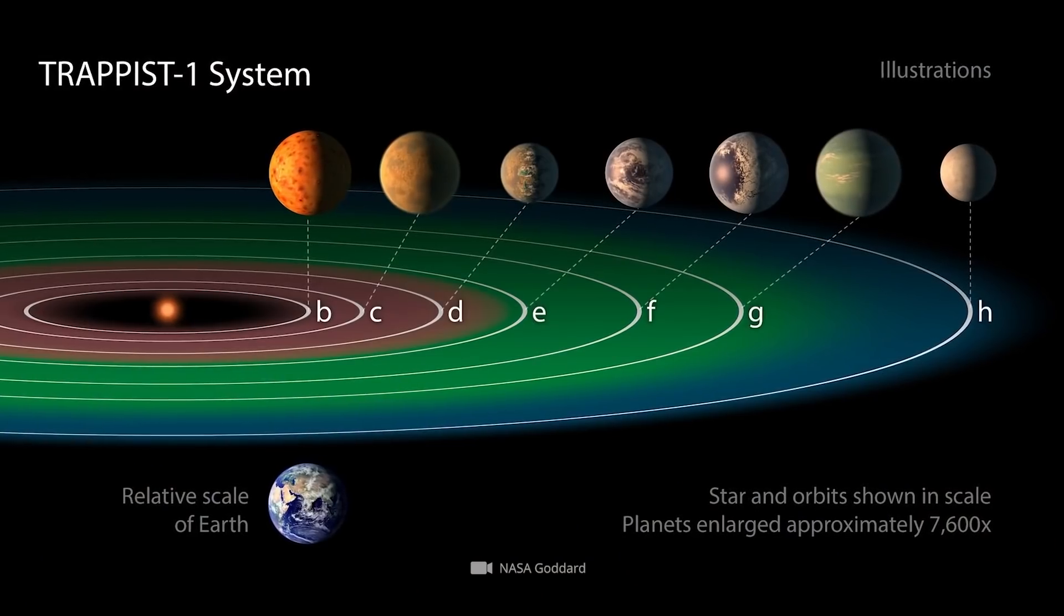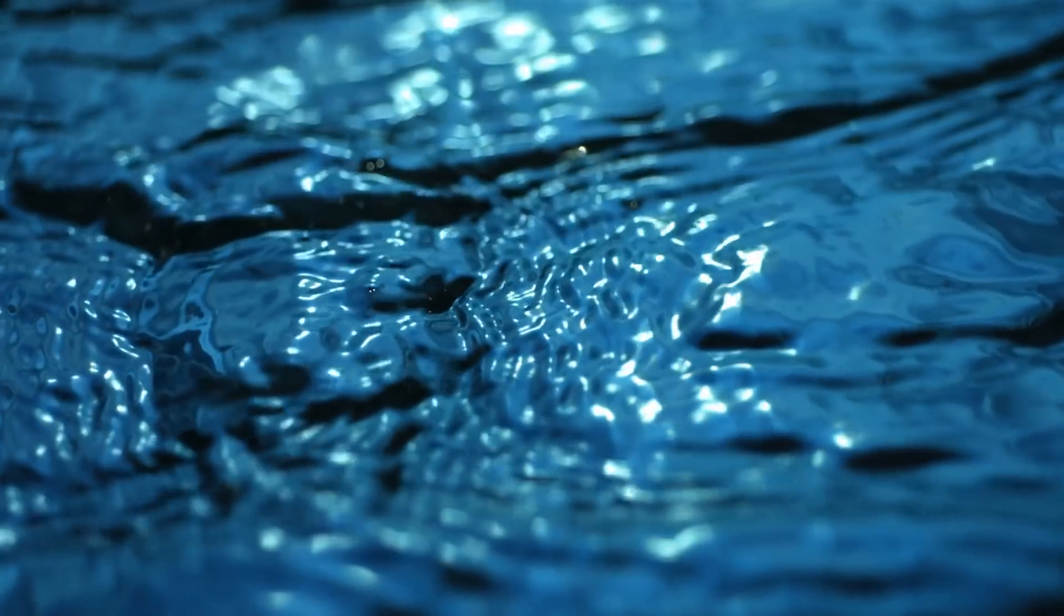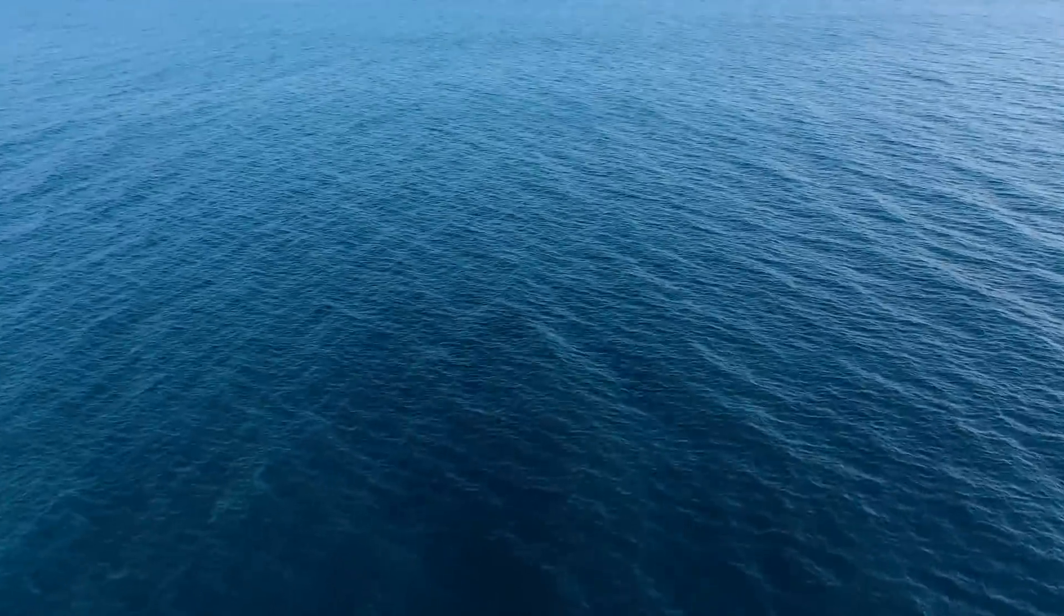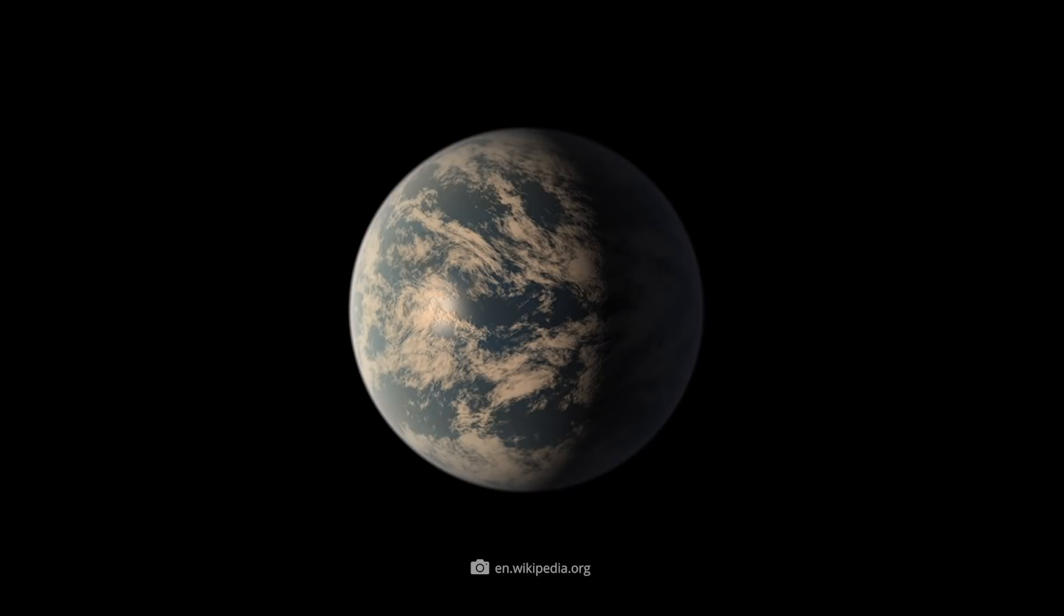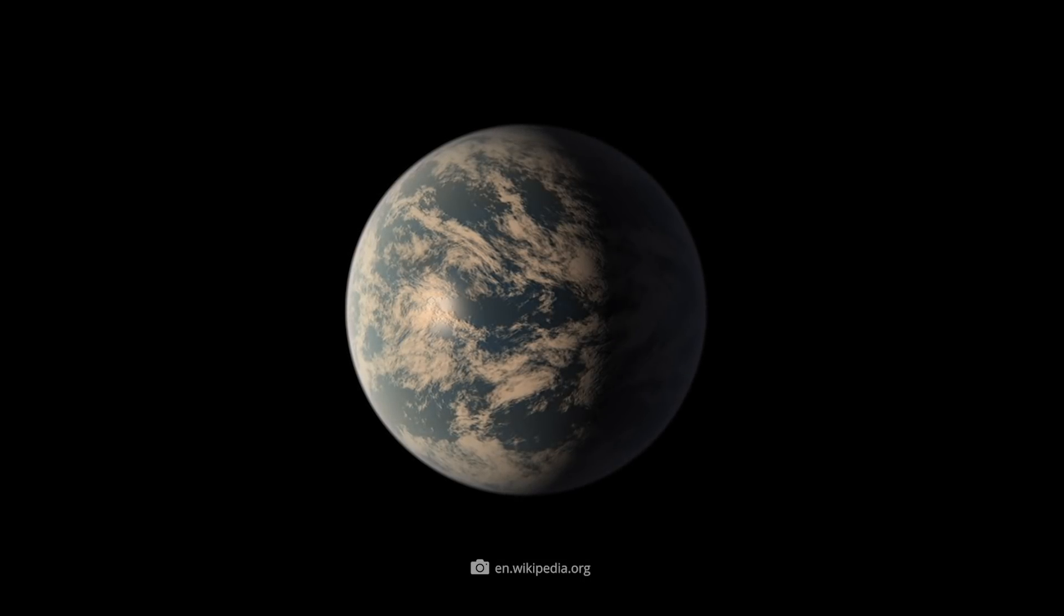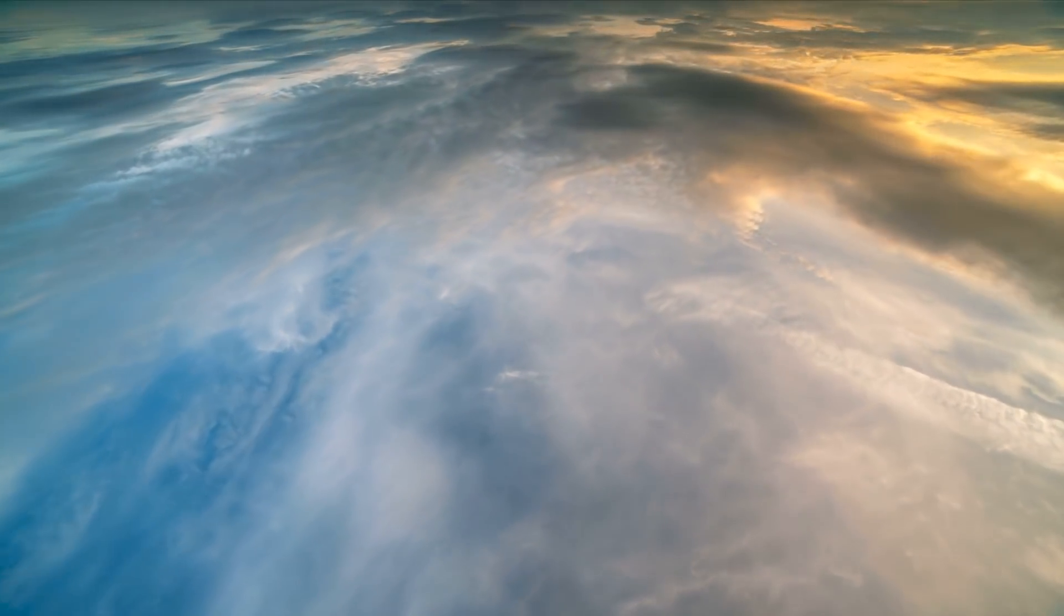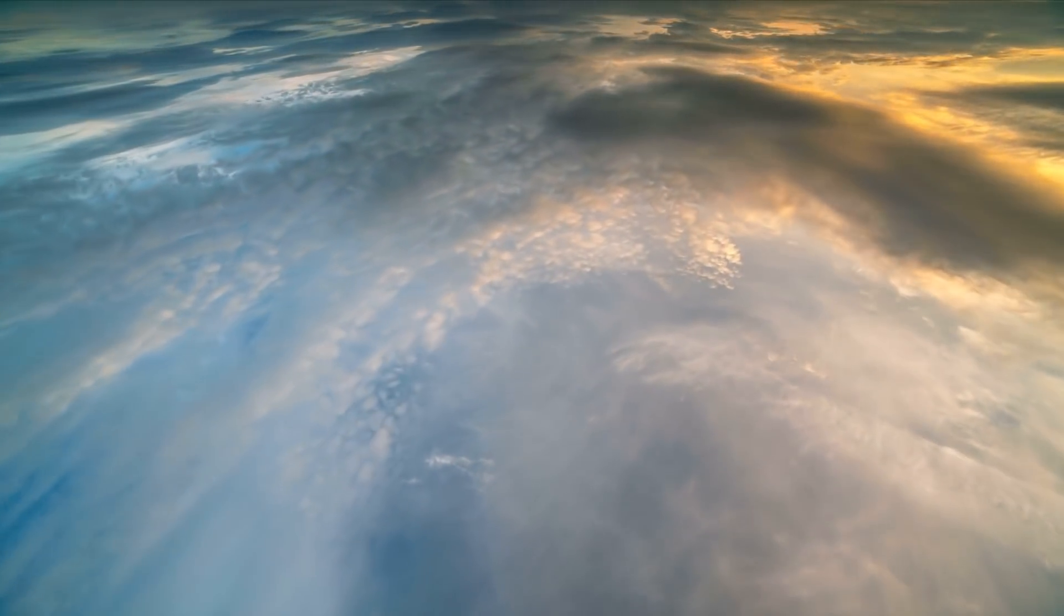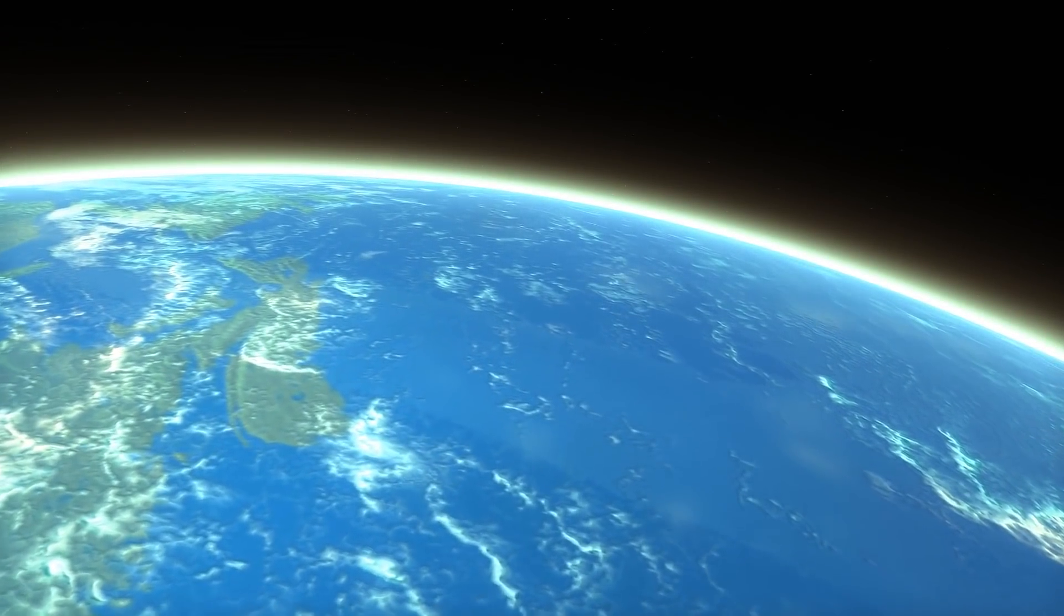TRAPPIST-1d is the lowest mass planet in the system, with about 5% of its mass consisting of water. This is probably distributed on its surface in the form of a huge liquid ocean. In addition, NASA experts have confirmed that TRAPPIST-1d has a compact, Earth-like atmosphere and receives only 4.3% more sunlight than Earth. Thus, this planet could truly be a super-Earth.